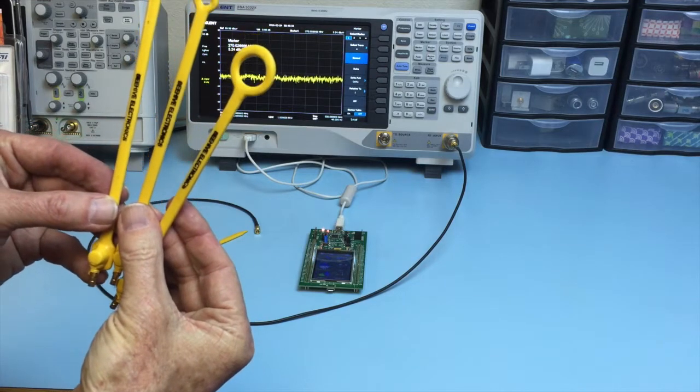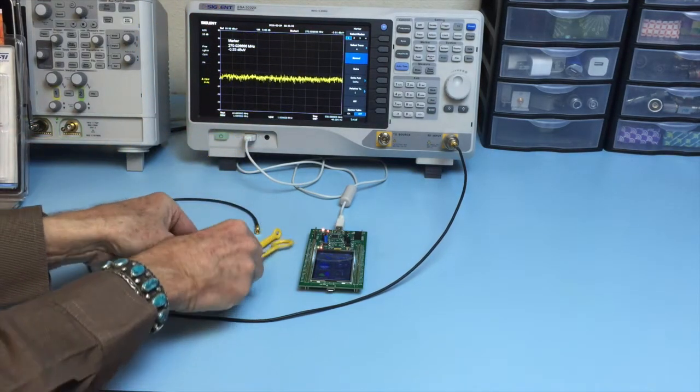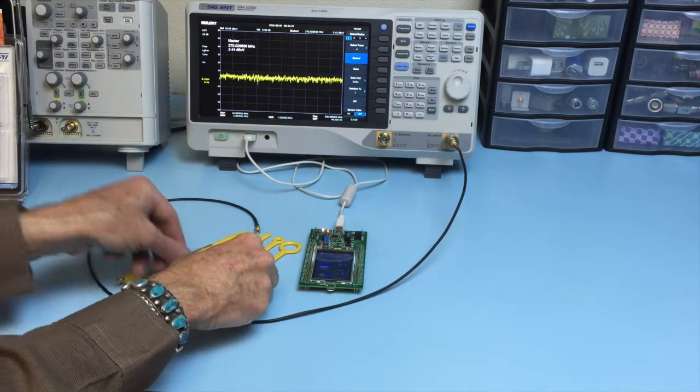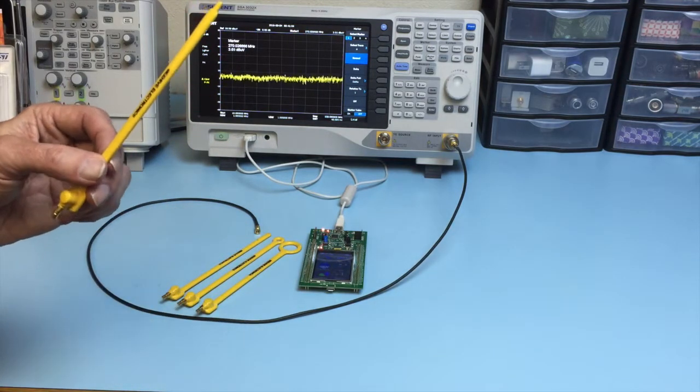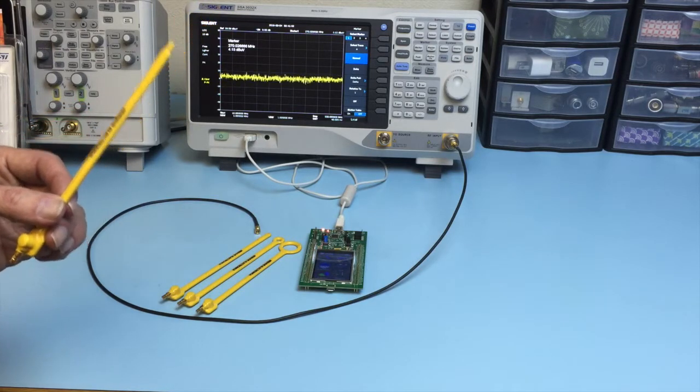H-field probes are most sensitive to magnetic fields, which you would expect from circuit traces. And it does include an E-field probe, which is most sensitive to electric fields.